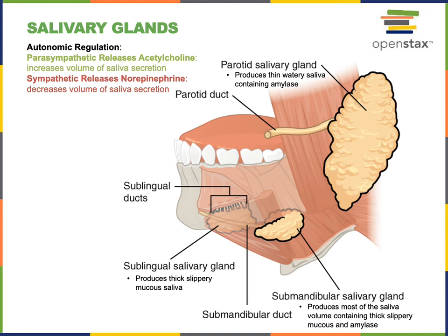The submandibular salivary glands are inferior and posterior to the sublingual glands, located inferior to the mandible. The submandibular salivary glands produce the majority of the volume of saliva. While this saliva has a thick, slippery consistency, it also contains the digestive enzyme amylase. The autonomic nervous system regulates the secretion of saliva.